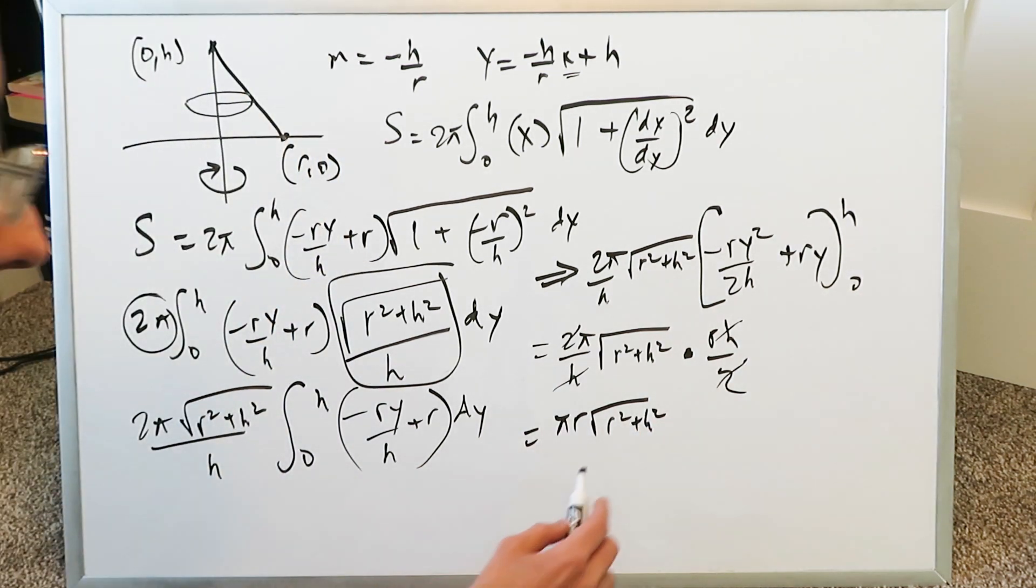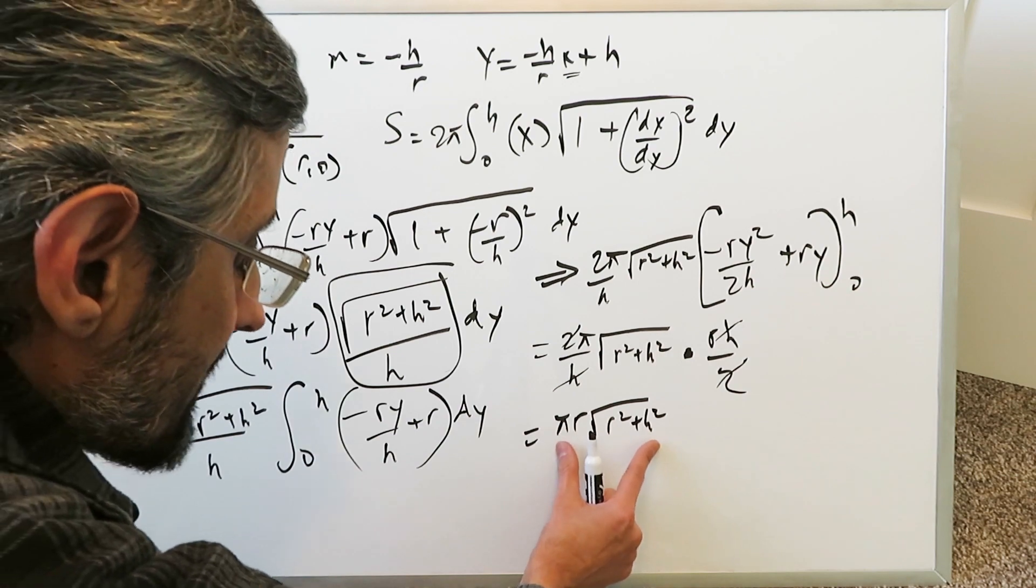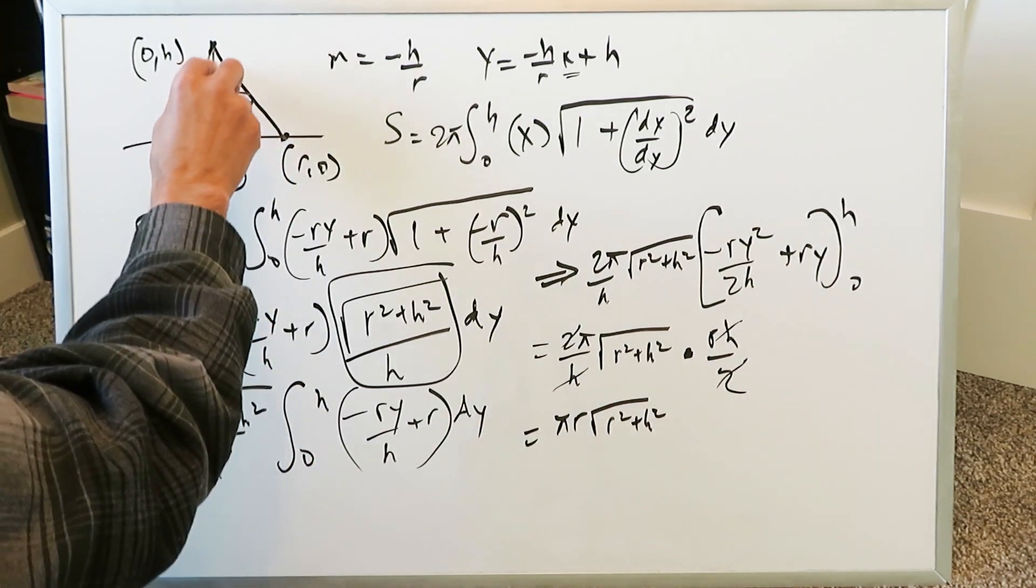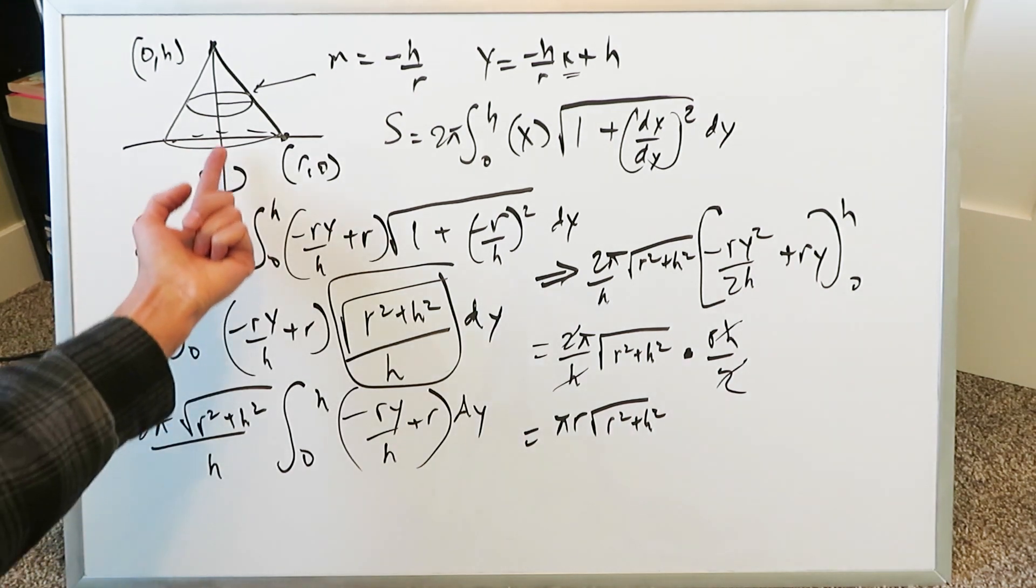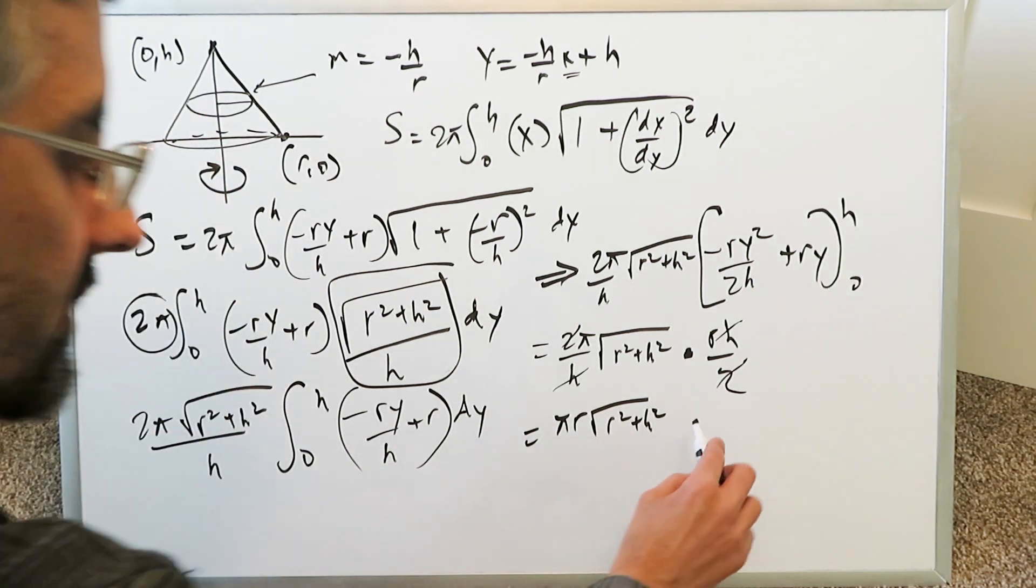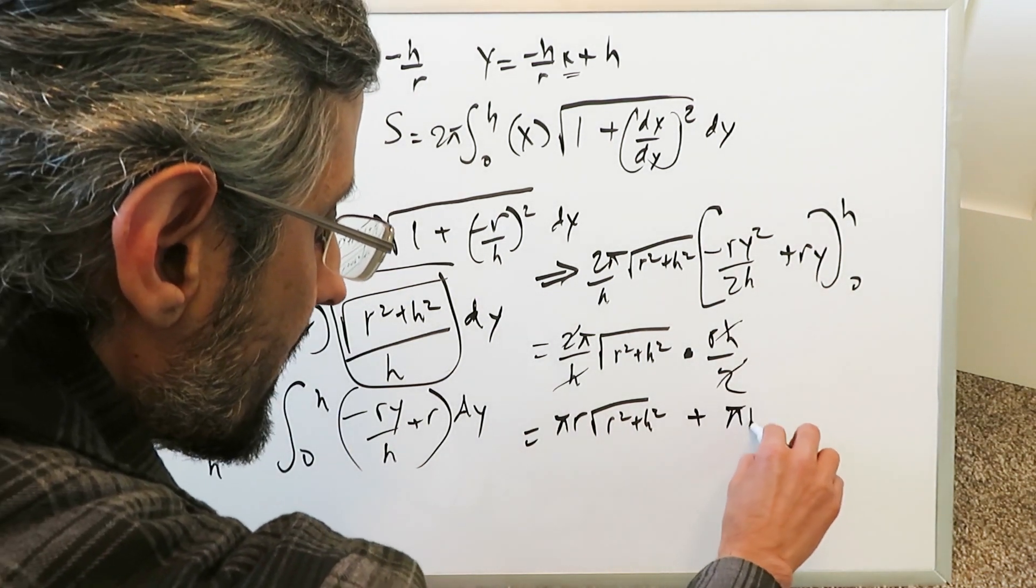When you consolidate everything you have pi r and then you have r square plus h square. But this right here alone is just the lateral surface area of your cone. The lateral surface area only. We haven't added in the circle. We must add in the circle.